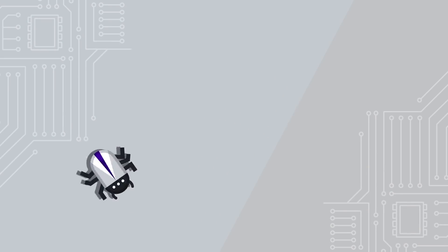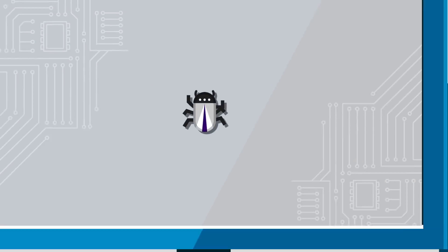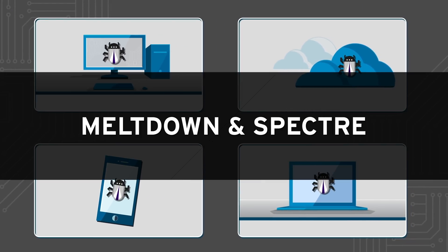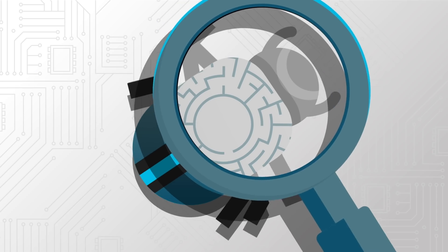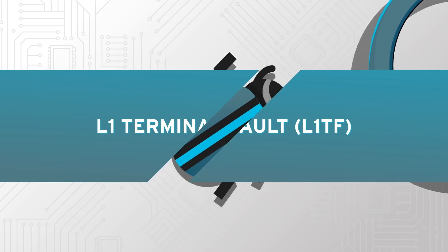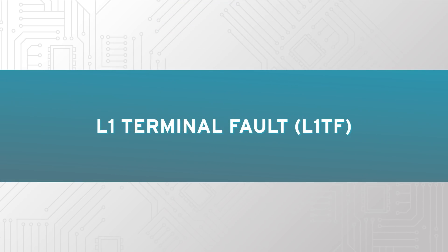If this all sounds like déjà vu, that's not too surprising. Over the past year, we've all grown familiar with names like Spectre, Meltdown, and Foreshadow, which is also known as L1TF. These names represent a new class of microprocessor hardware vulnerability, known as a speculative execution side channel.